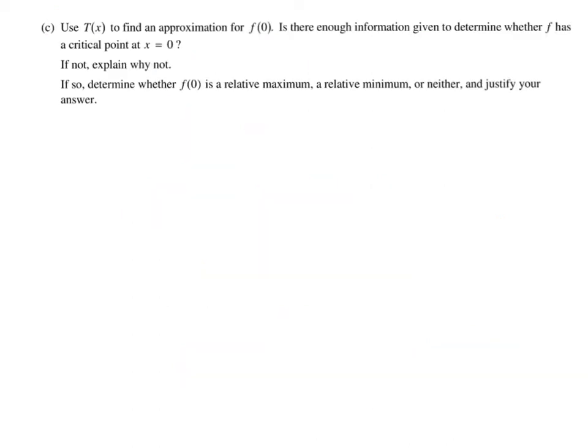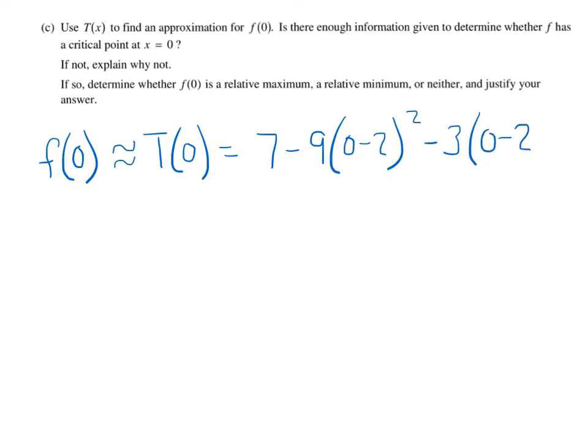So we're going to use T(x) to find an approximation for f(0). So we're going to say f(0) is approximately, and make sure we don't throw an equals right there, it's approximately T(0). And T(0) is equal to 7 minus 9 times (0 minus 2) squared minus 3 times (0 minus 2) cubed.